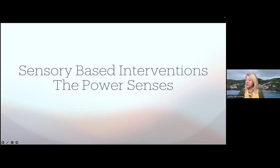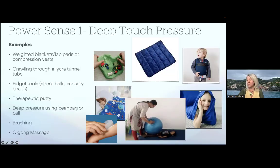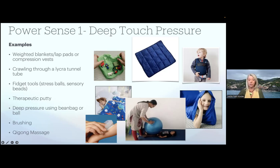We call the three sensory domains of deep-touch pressure, proprioception, and vestibular the power senses, because they really provide the biggest bang for our buck. Input via these senses can have a stronger and more lasting impact. With deep-touch pressure, the effects can last 90 minutes to two hours. Examples include compression vests, crawling through a lycra tunnel, fidget tools, sensory beads, therapeutic putty, deep pressure using a therapy ball or bean bed, brushing, and qigong massage. Some of these interventions have more research supporting them than others.